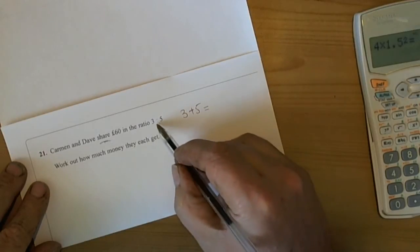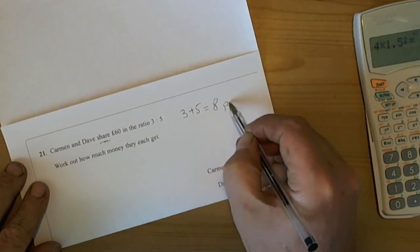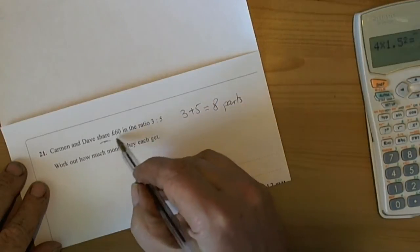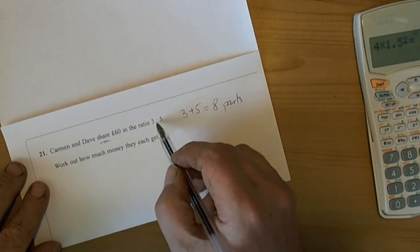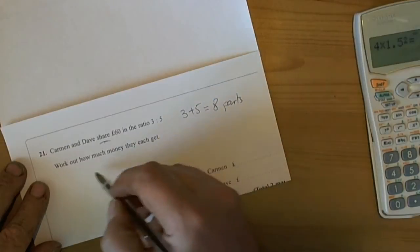So we have 3 plus 5, 8 parts. So we're going to share the 60 into 8 parts to find out what one part is worth.